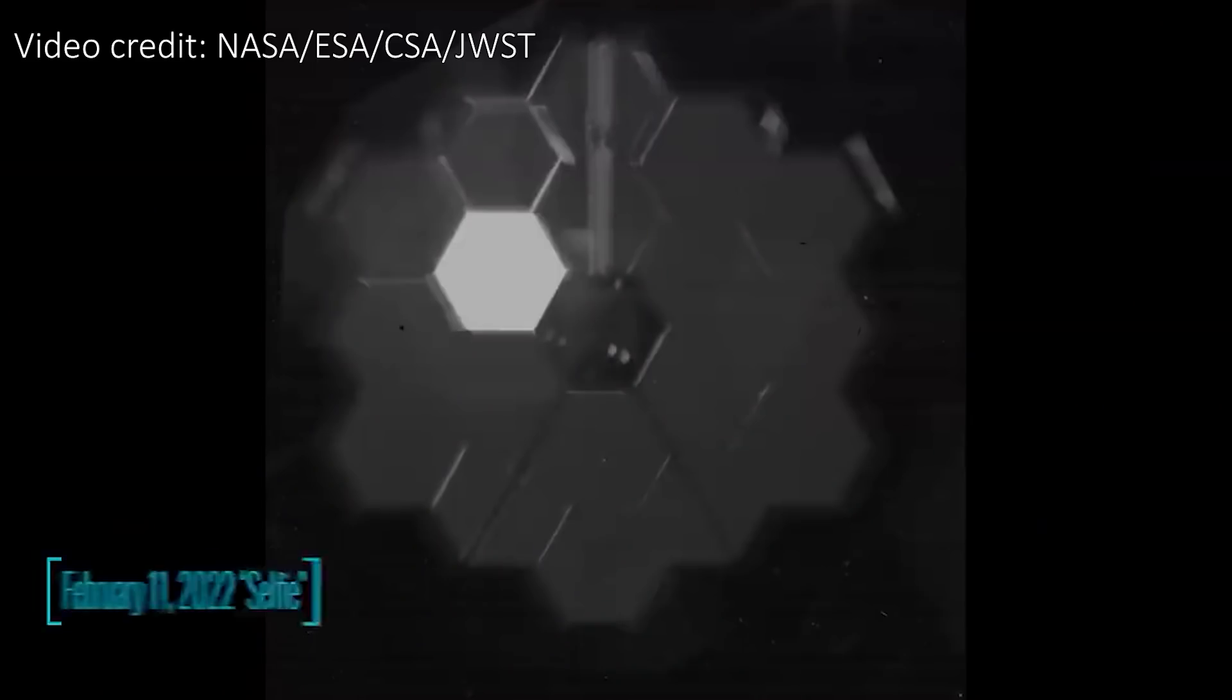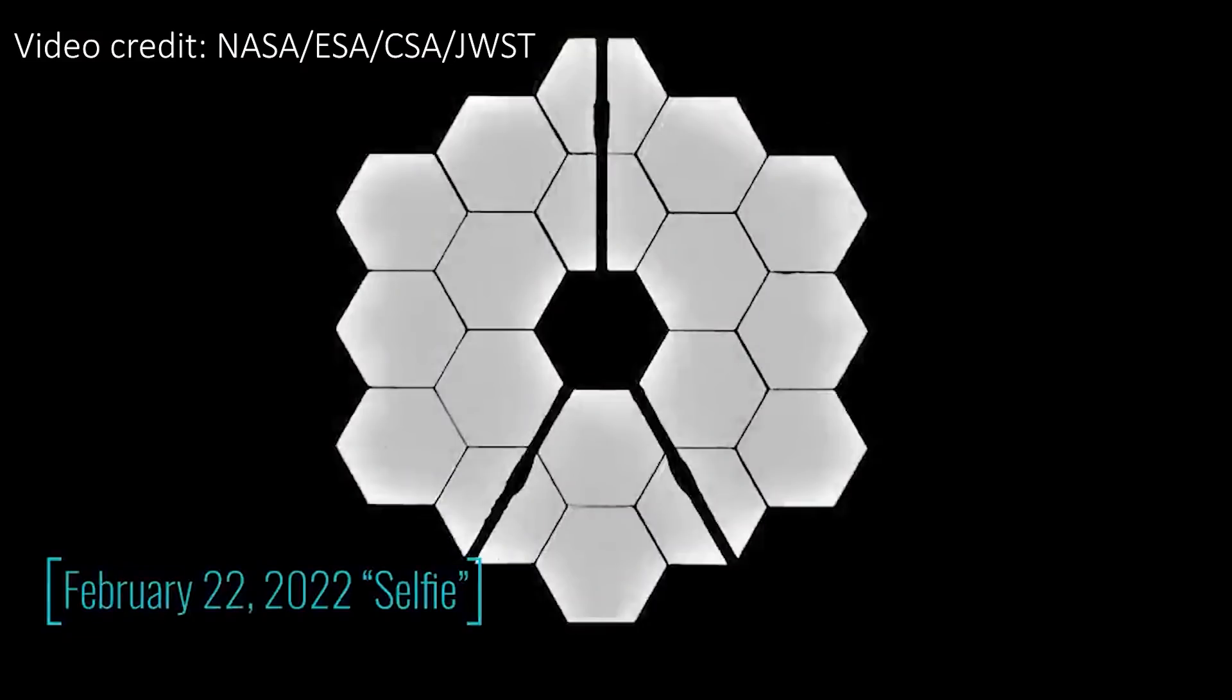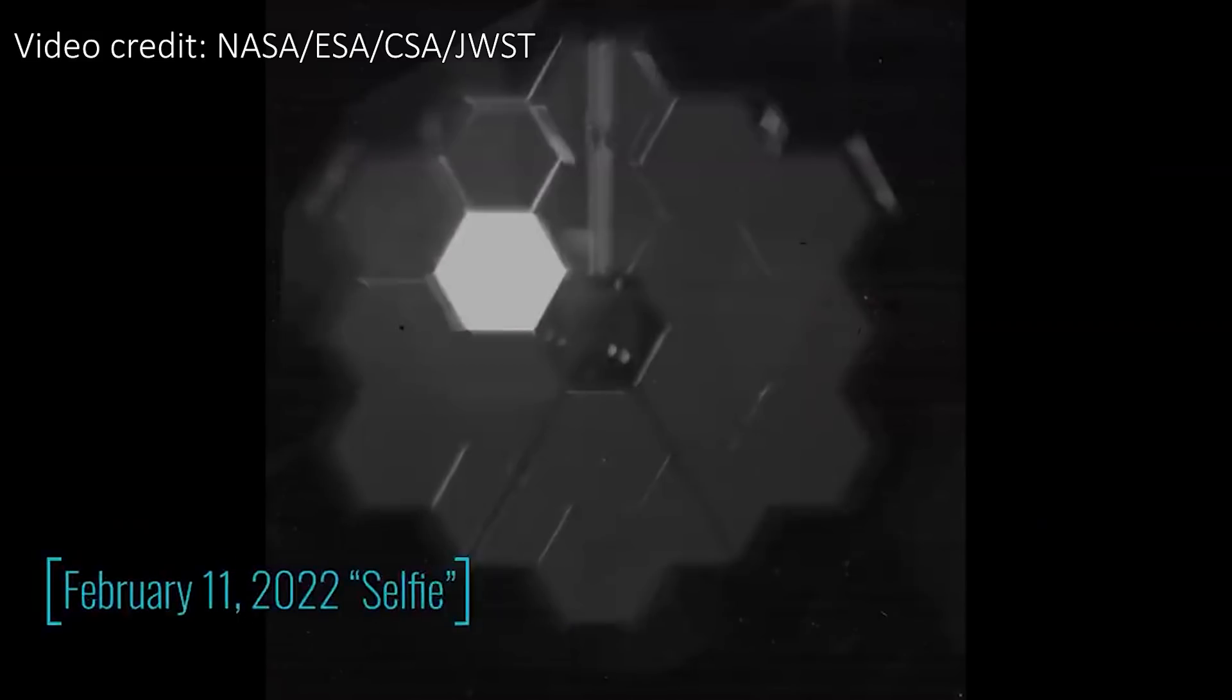This whole alignment process was helped by the JWST selfie that was also released alongside the first image we saw, because if you know the exact shape of the mirrors it tells you how you should warp and move them in order to get them to work together and produce a single image. This picture here actually shows you an updated selfie and you can see how perfect it looks now. There's no light leakage or segments lighting up more than the others, just one perfect looking primary mirror.